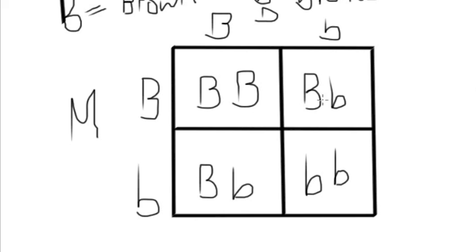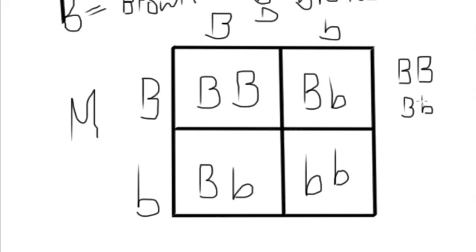If you look at this first box, it says big B, big B — that's one of my possibilities. If I look at these two middle boxes, I have big B, little B — that's another possible genotype. And in the bottom one, I've got little B, little B. So there are only three possible genotypes: big B big B, big B little B, and little B little B.